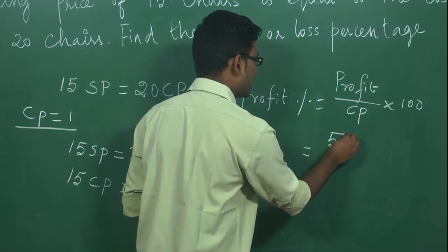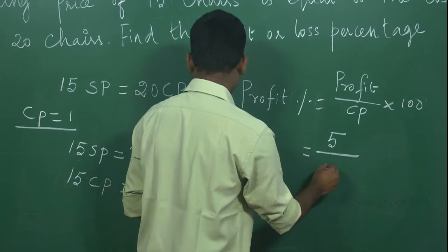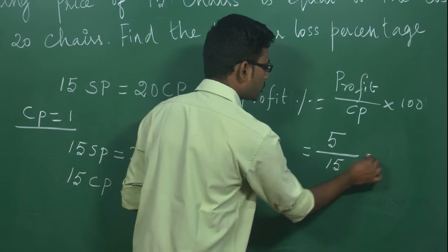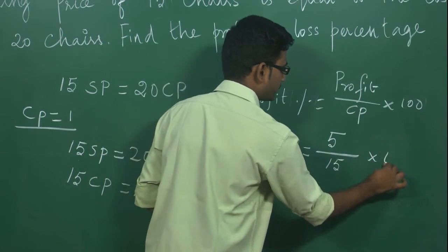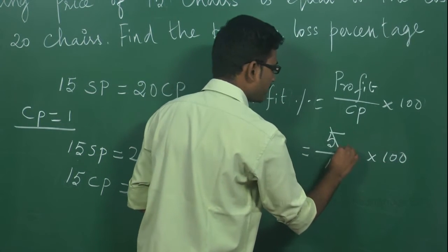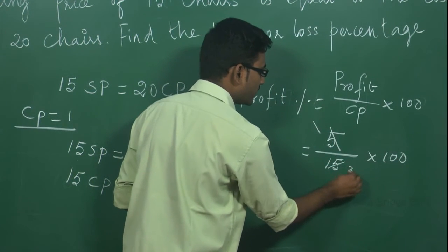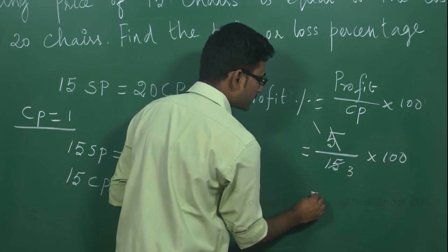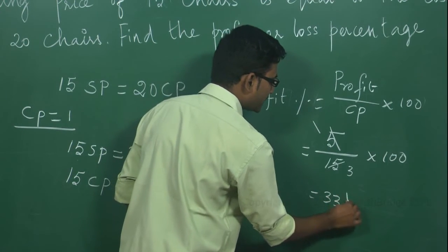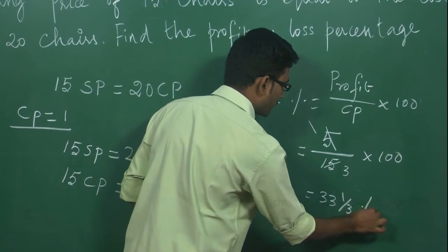Cost price is 15 rupees. So profit percentage = 5 / 15 × 100, which simplifies to 1/3 × 100, giving 33⅓%. That will be the profit percentage.